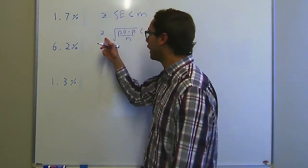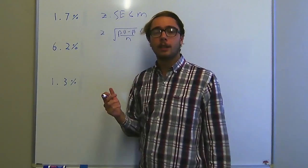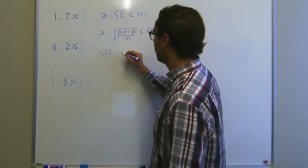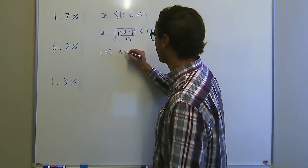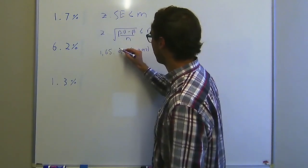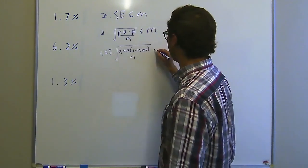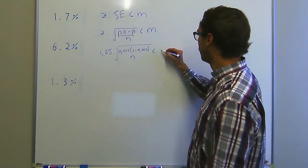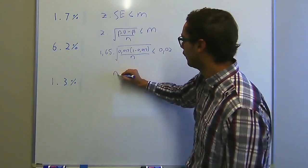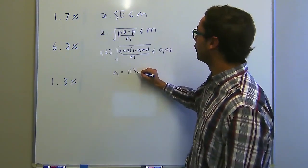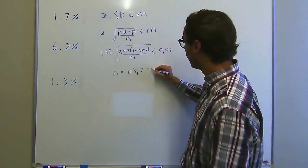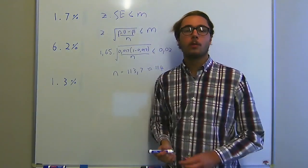So if we now substitute our values, the Z value, because it's two-sided we're going to use a 95% so that's going to give us 1.65 times our proportion which is 0.017 times 1 minus 0.017 over N which is what we're solving for is less than or equal to our margin of error which is 0.02. So if we then solve for N we'll find that the N is 113.7 and because it's a whole number we round up to 114. So our sample size has to be 114.